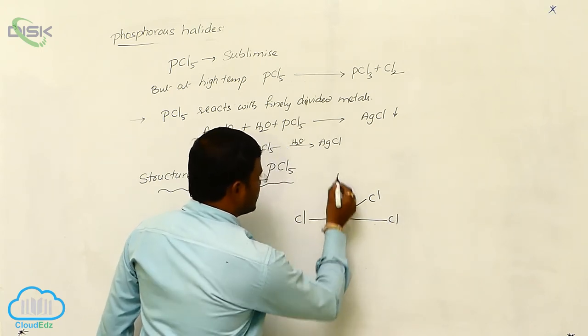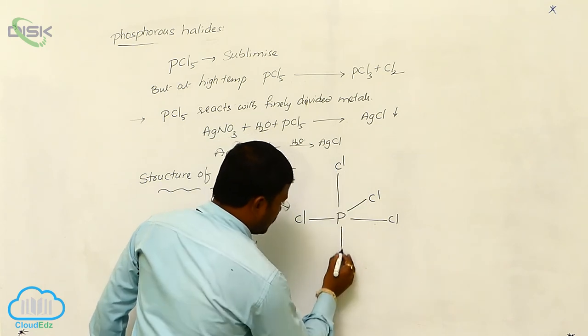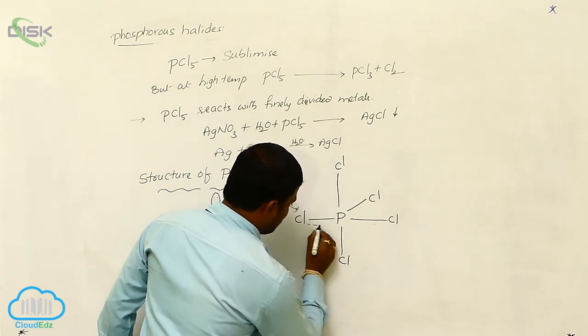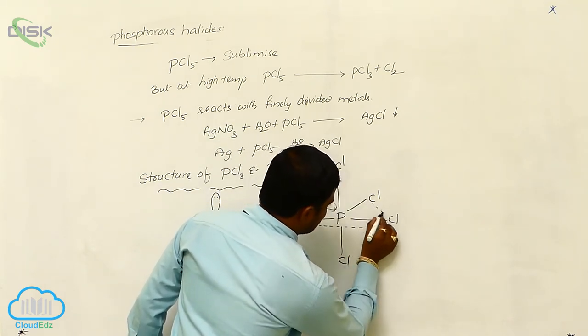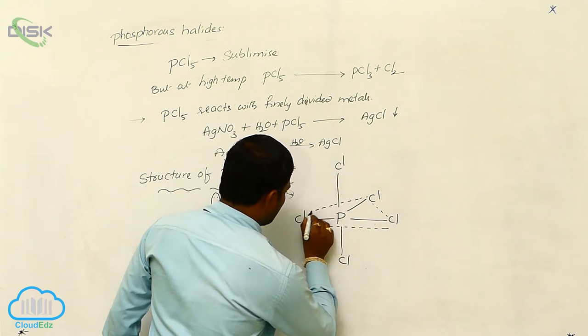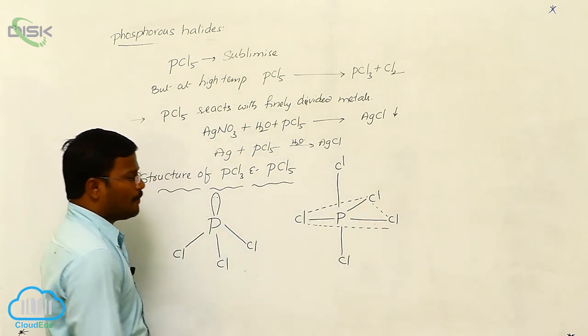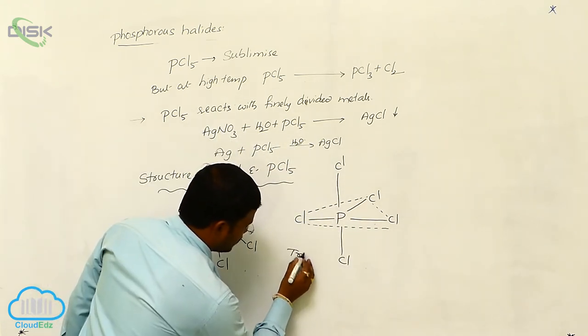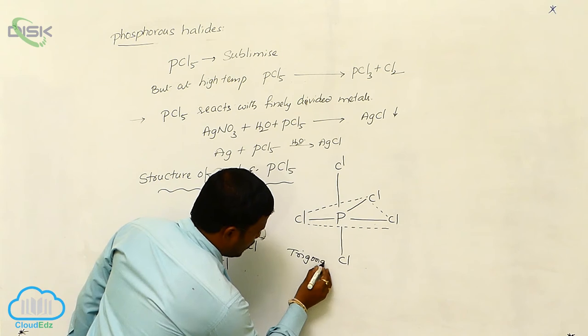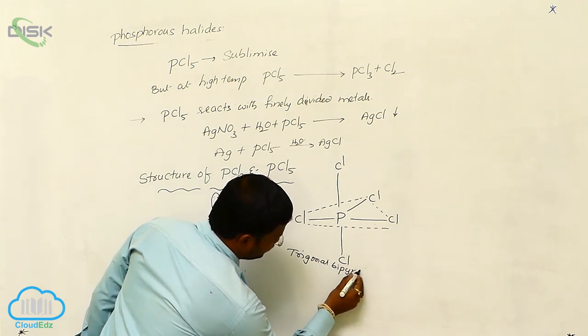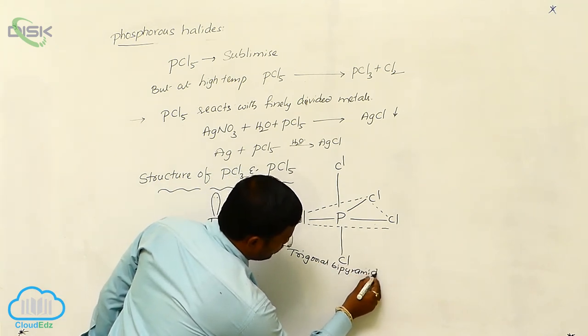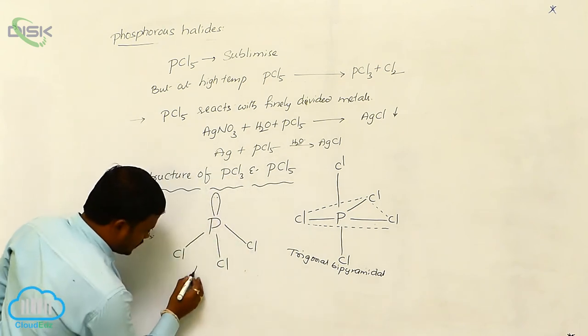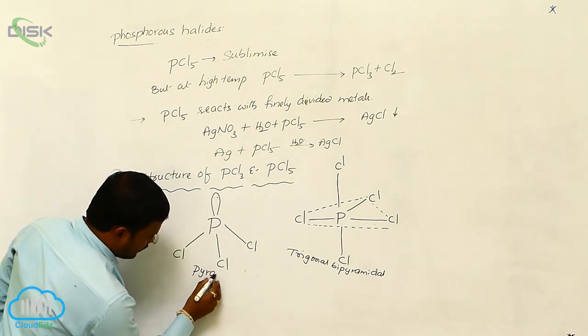Trigonal bipyramidal geometry - it is simple pyramidal geometry.